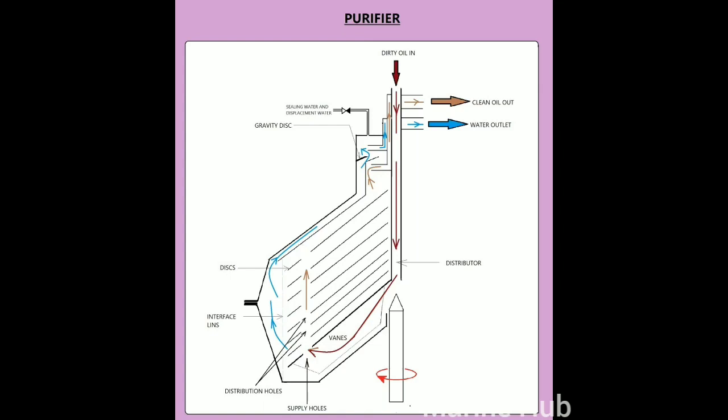The oil passes from the distributor to the bottom of the bowl and from there to the supply holes. From the supply holes, the oil is fed to the spaces between discs through the distribution holes in the discs.